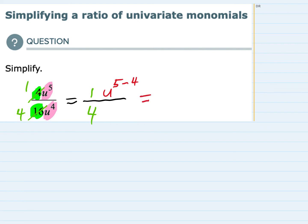And this now simplifies. u to the 5th minus 4 is just u to the 1 or u times that 1 is going to leave me with just a u in the numerator and I still have that 4 in the denominator. So simplified I have u over 4.